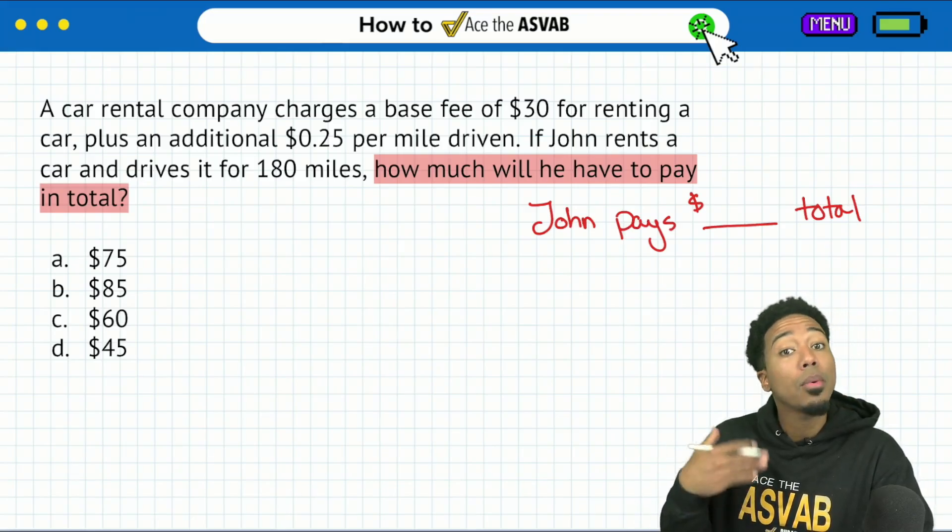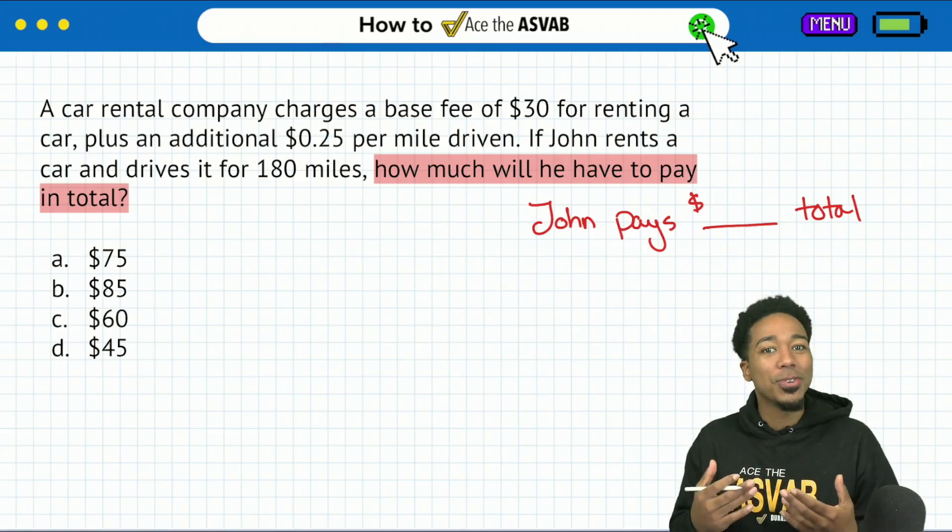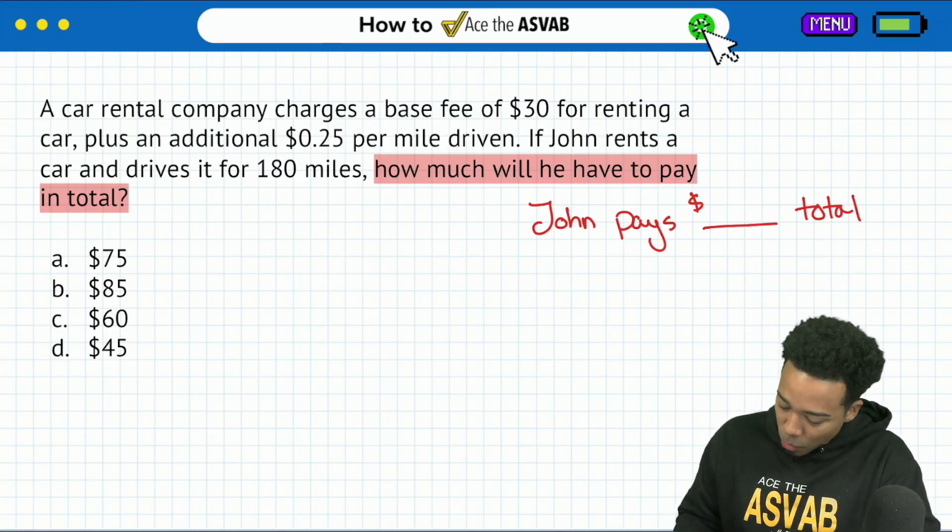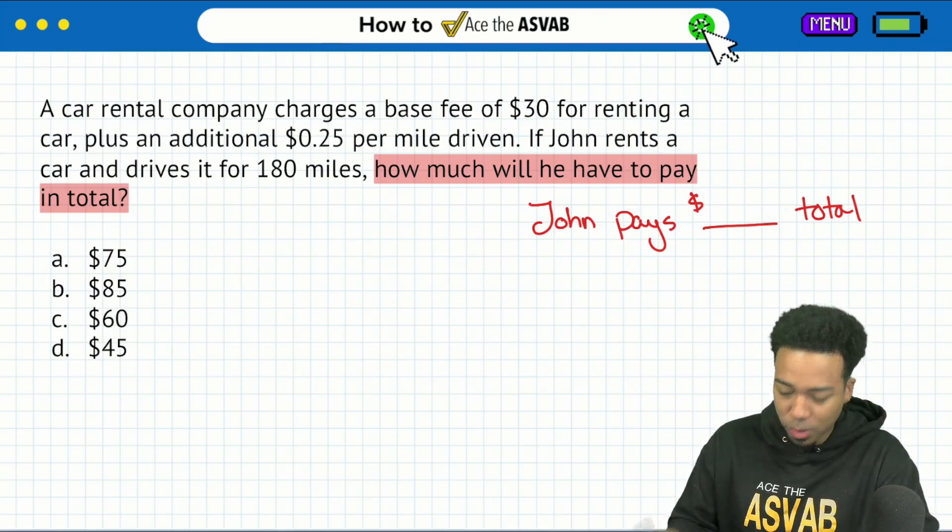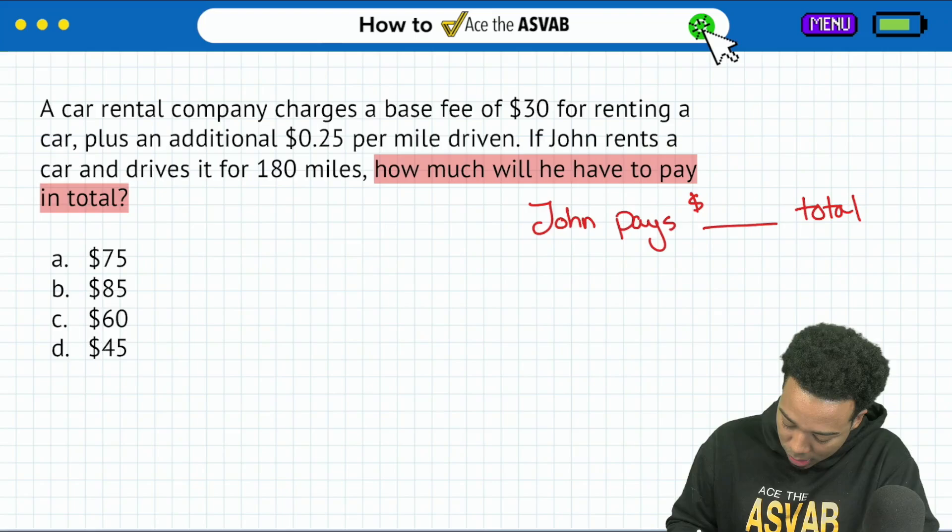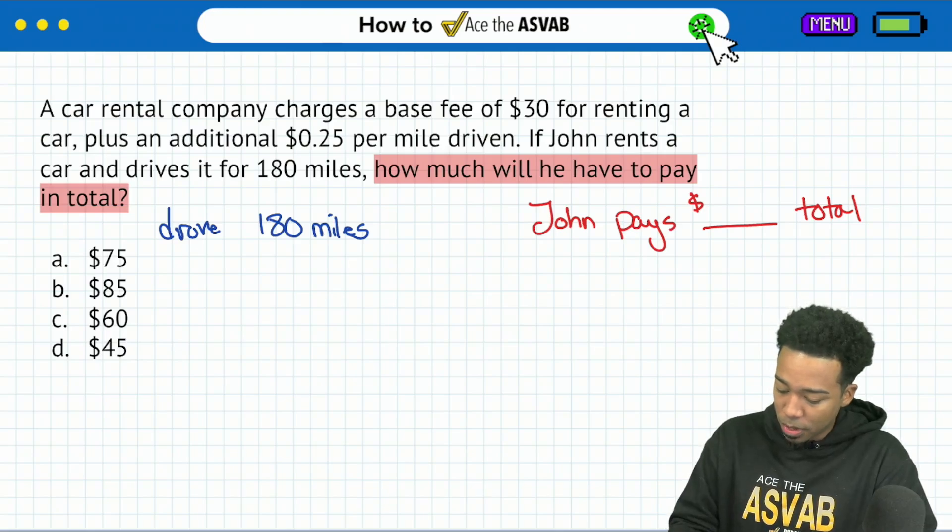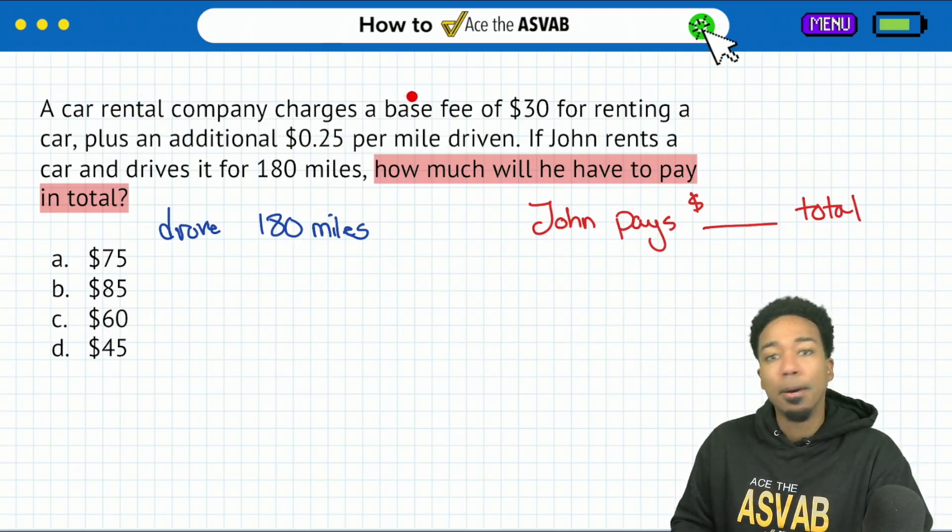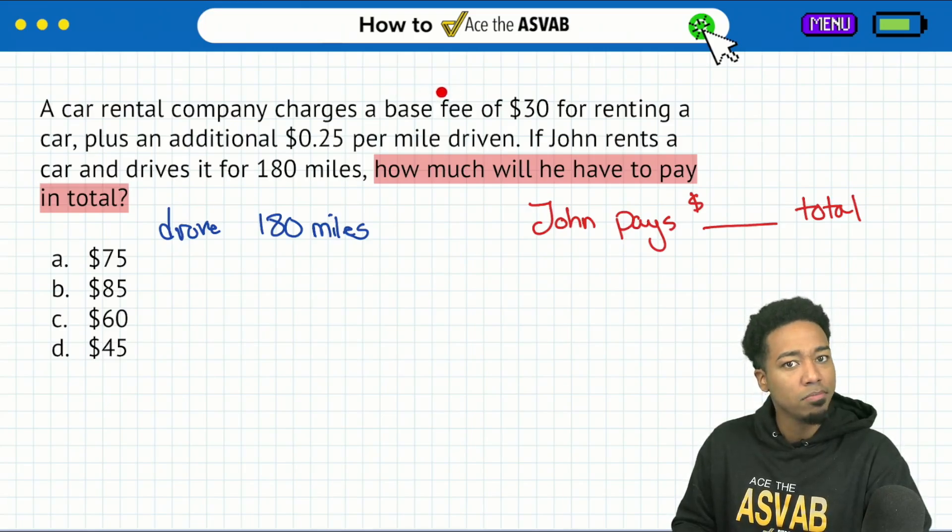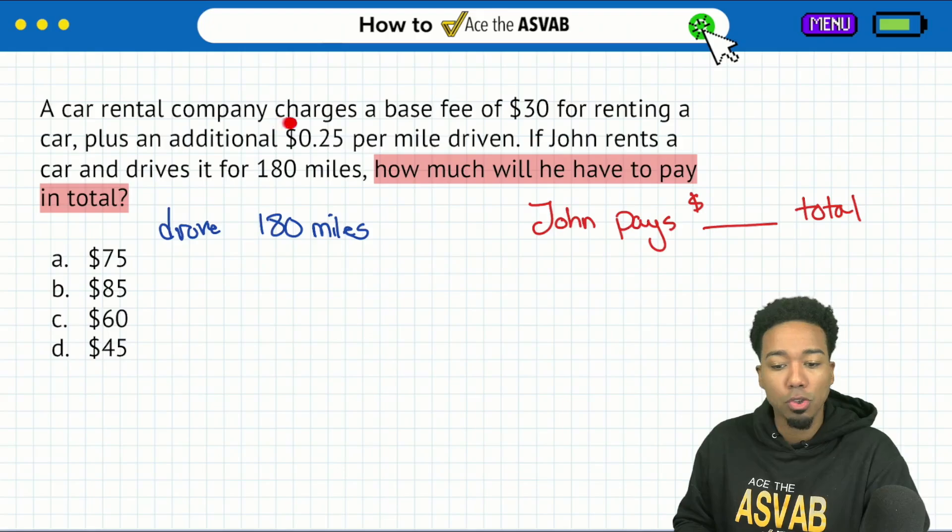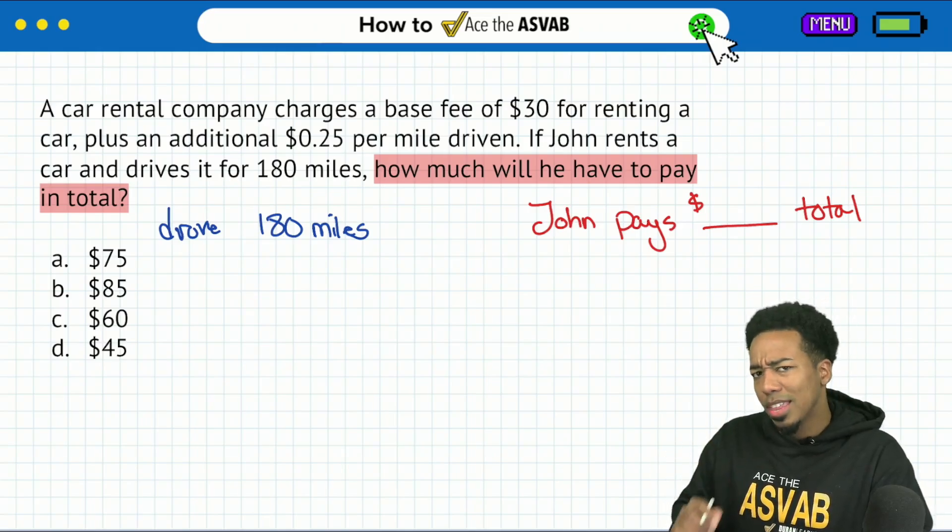So that's a good way to kind of think about things as we move along with the information, because it's going to help us really contextualize things, line things up. But don't forget that. It looks like we're looking for that final value. So what's next? Well, now we're going to write down the information. And this is where I'm going to show you how to know when you're dealing with Y equals MX plus B. This is it right here. So we know that he rents the car and drives it for 180 miles.